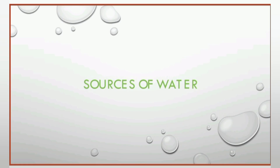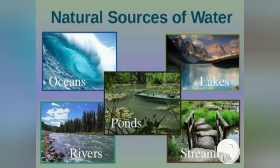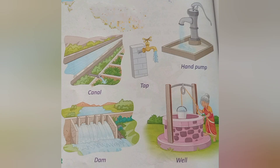Let us see from where water comes. We get water from rain. The water from rain is called rainwater. Rainwater fills ponds, lakes and rivers. Some rainwater also seeps into the ground and is known as groundwater.